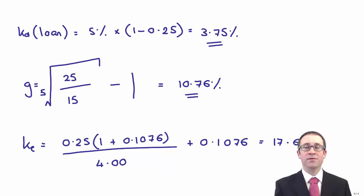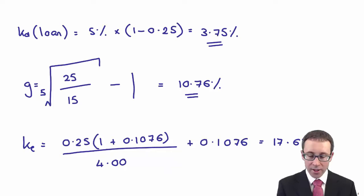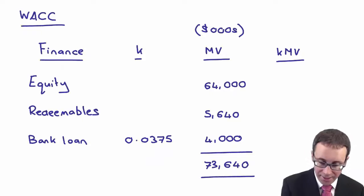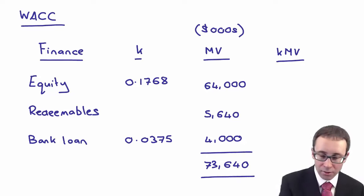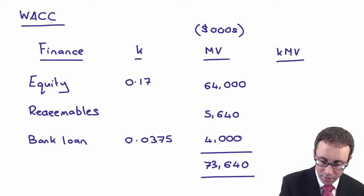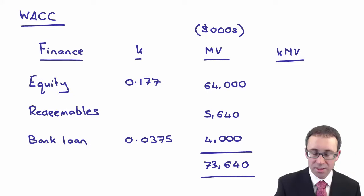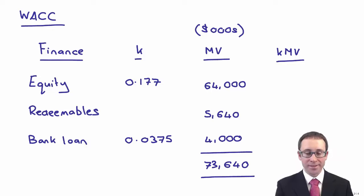Remember, in order to then use that 17.68%, we need to go through there and put it in as a decimal into my weighted average cost of capital calculation. 0.1768. Or to be consistent with the model answer, let's just keep it there at 0.177.